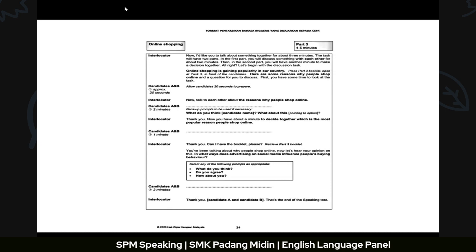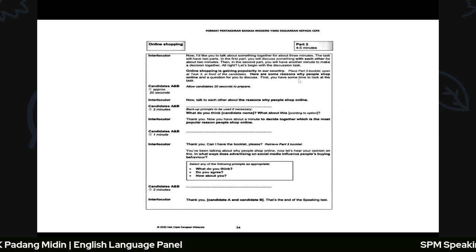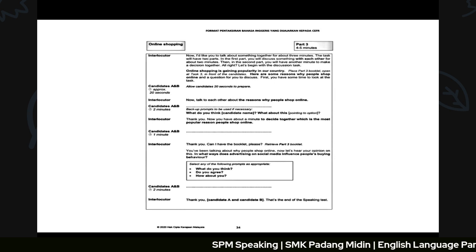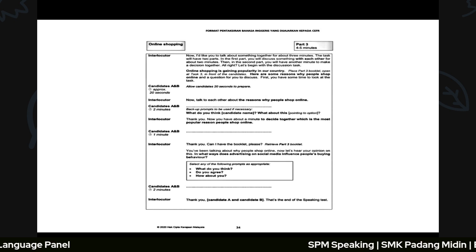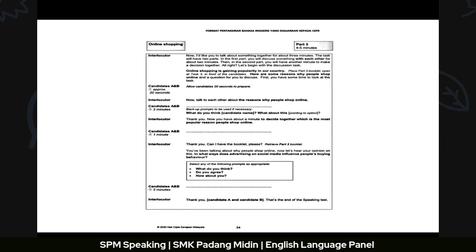Part Three is the discussion and decision task. The interlocutor says: 'I would like you to talk about something together for about three minutes. In the first part you will discuss for about two minutes, then in the second part you have another minute to make a decision together.' An example topic is: 'Online shopping is gaining popularity in our country.' You will also receive a mind map.